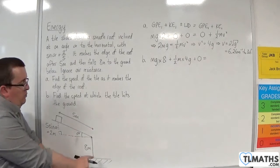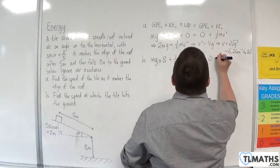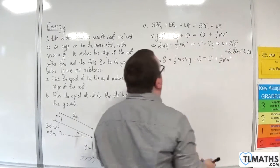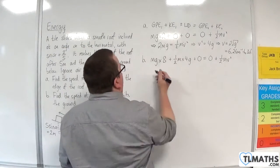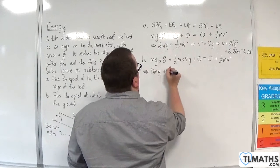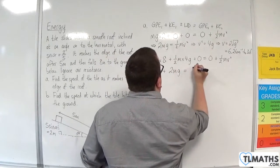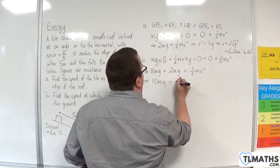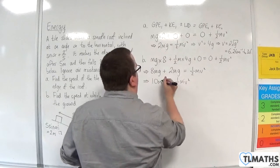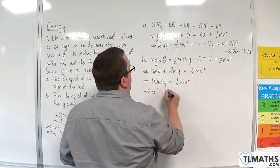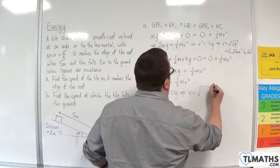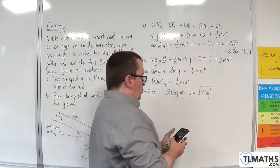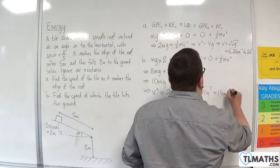The final gravitational potential energy when I hit the ground will be zero. And the kinetic energy will be one-half mv squared. So we have 8mg plus 2mg is equal to one-half mv squared. So we've actually got 10mg is one-half mv squared. And, of course, the m's cancel again. So v squared is 20g. So v must be the square root of 20g, which is 14 metres per second.